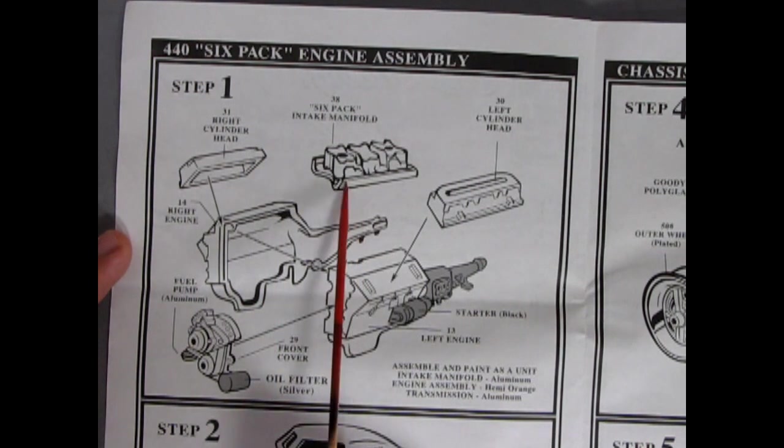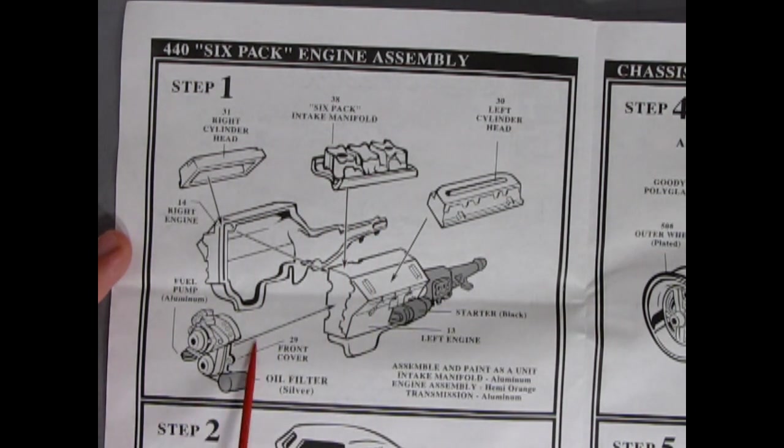Cylinder head left and right go on. There is our six-pack intake manifold. And here's our Chrysler fuel pump and front cover as well as the oil filter, which stuck out straight ahead. Pretty easy to get at when you are doing an oil change.